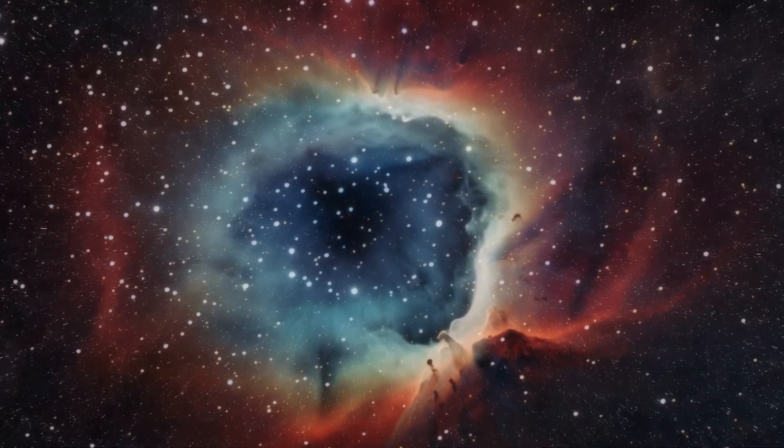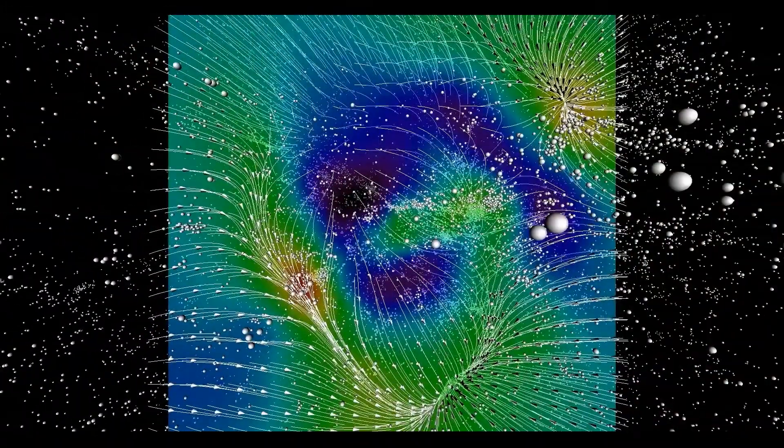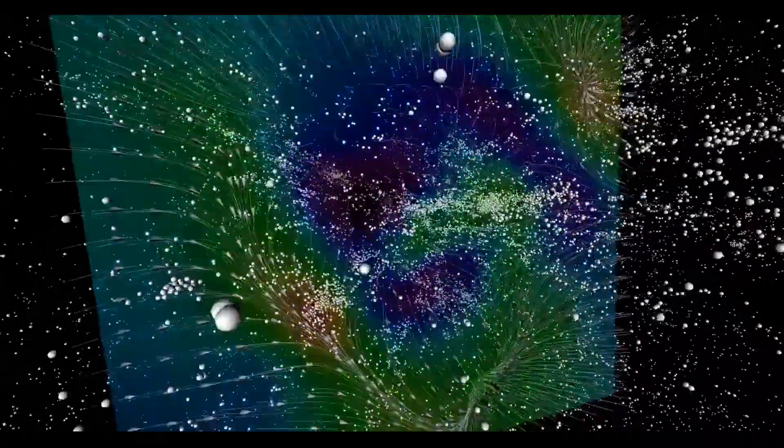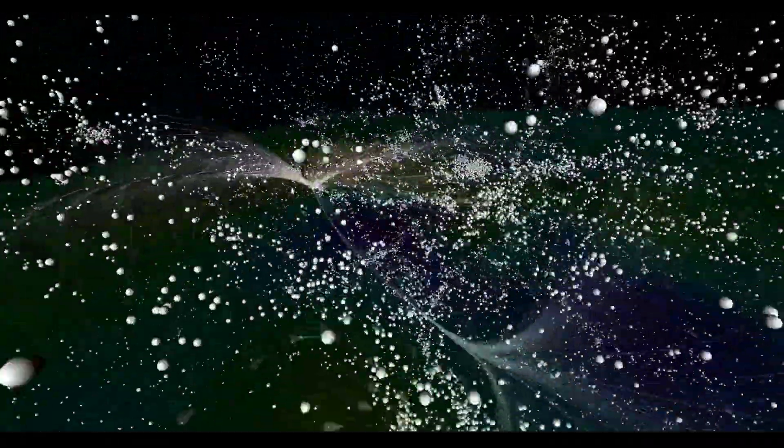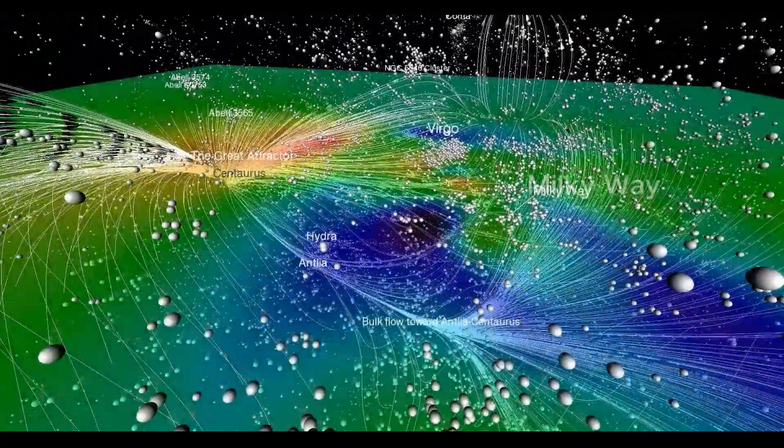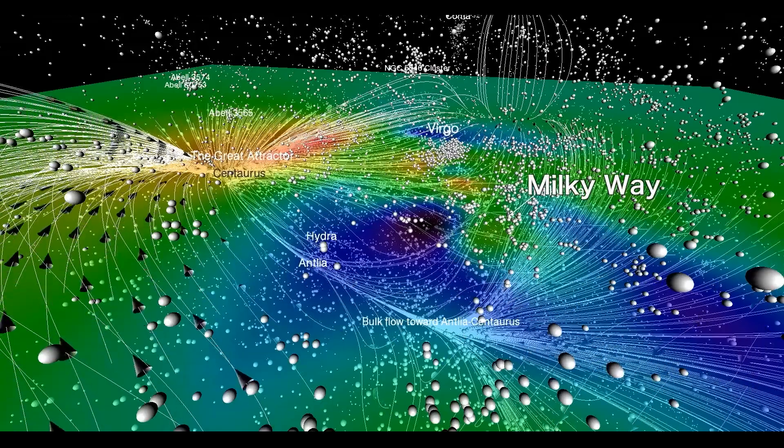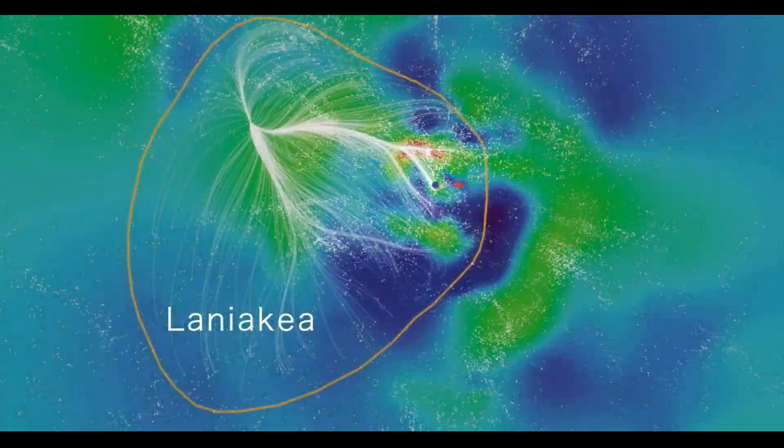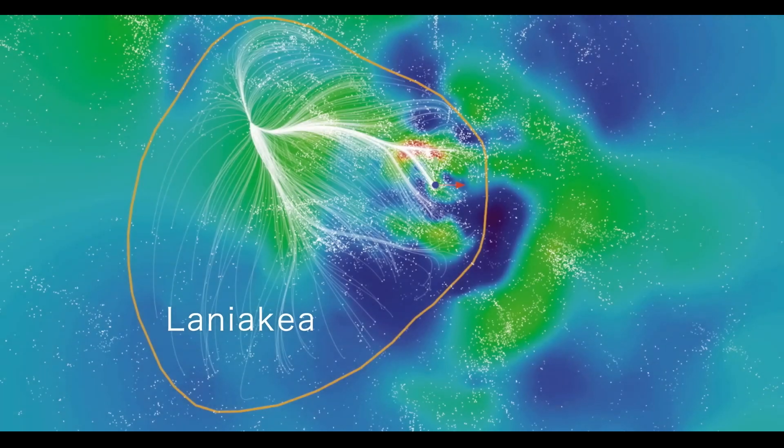Actually, that isn't entirely true. The Great Attractor isn't exactly in the Laniakea supercluster. It is the Laniakea supercluster. That's what we learned when we first saw beyond the zone of avoidance. The Great Attractor isn't a thing. It's a place.